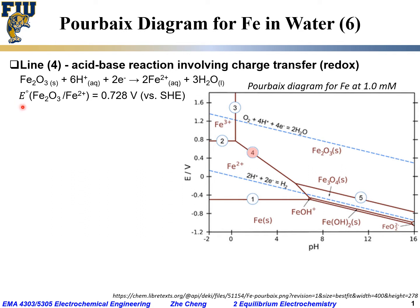If you check the standard electrode potential series, the standard electrode potential for this redox pair — Fe₂O₃ and Fe²⁺ — would be 0.728 V versus SHE, the standard hydrogen electrode.